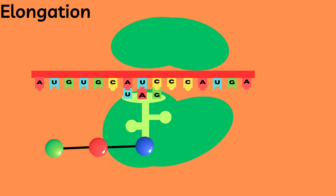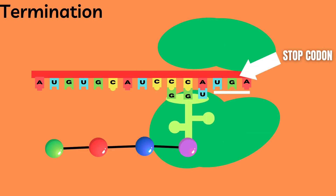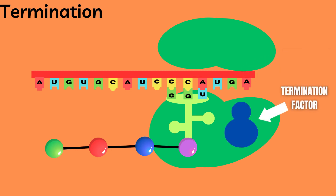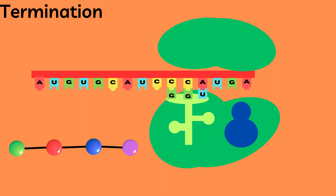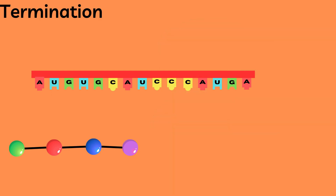This continues until a stop codon is reached. Termination occurs once such a stop codon is reached, and when this happens a termination factor binds to the ribosome complex. This will cause the chain of amino acids to be released. Then the two ribosome subunits and the tRNA move away from the mRNA in a process known as disassembly.